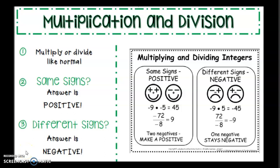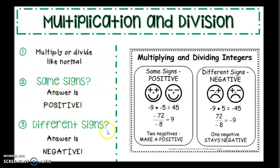Now let's switch gears and do multiplication and division. This one is honestly easier than addition and subtraction. Step one: multiply or divide like normal — we know how to do that. Step two and three: do they have the same sign? Your answer is positive. Do they have different signs? Your answer is negative. That's as complicated as it gets.